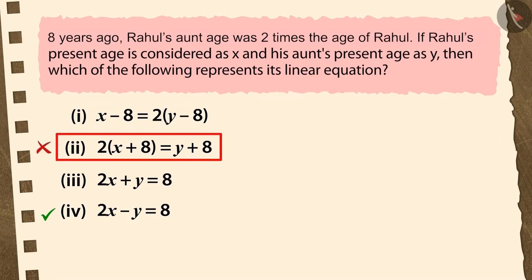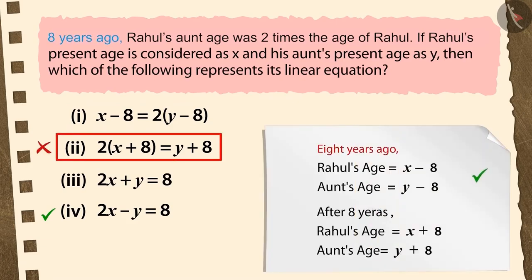The second option is incorrect because we are talking about age of both of them about 8 years ago in the question. But here, X plus 8 and Y plus 8 indicate their age after 8 years.